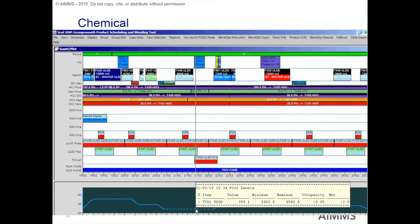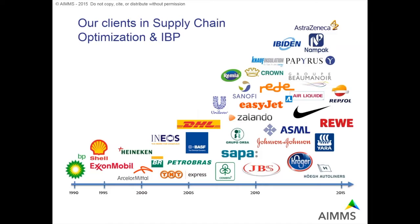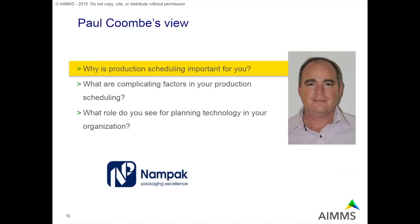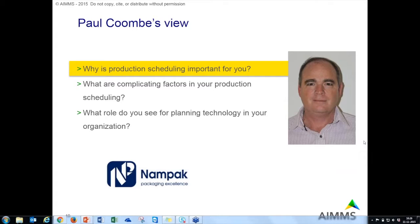Given all that diversity, what I really like about AIMS is that you can wrap the technology around whatever complexity you have and always get to a good, easy-to-use, workable solution. That's why I'm also delighted that Paul Coombe is in this webinar. I'll switch on Paul's microphone right now — I'm really looking forward to hearing his view on production scheduling and why it is important for him and for NAMPAC Glass.